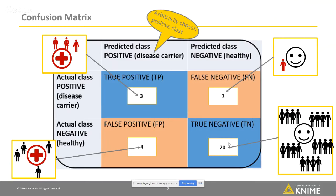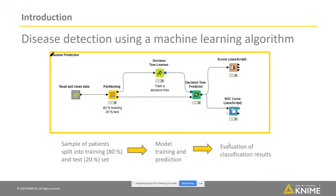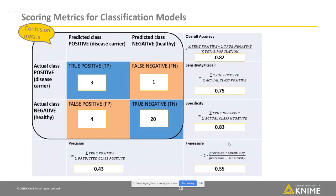In the context of data science, the classification is not made by a doctor, but by a machine learning model. Here we see a workflow performing classification. We start by reading some data and partitioning it into a training set and a test set. Then we train a machine learning model on the training set, and then we predict the target class values using the trained model on the test set. The last step is to evaluate the model performance by comparing the actual and predicted target class values in the test set, using the scoring matrix shown here.